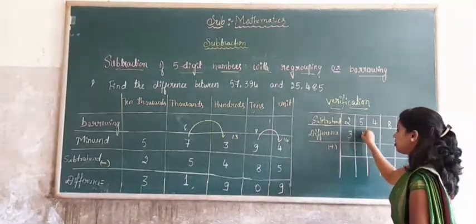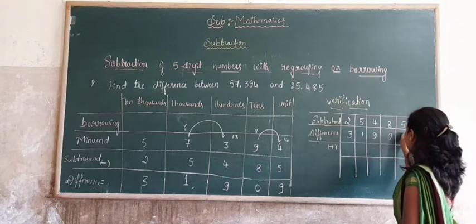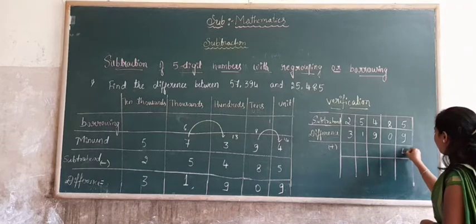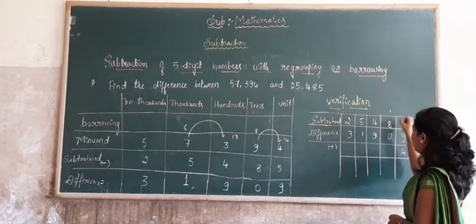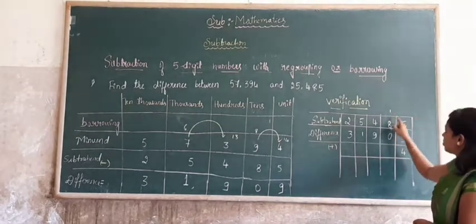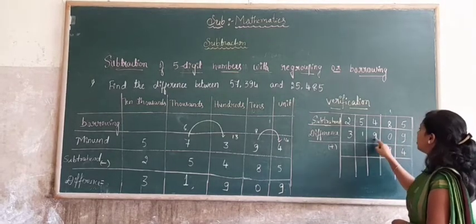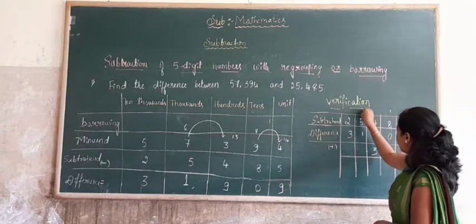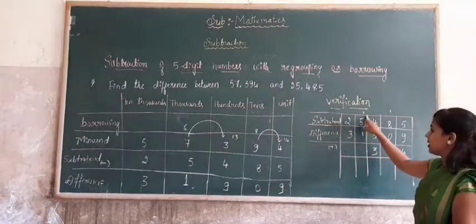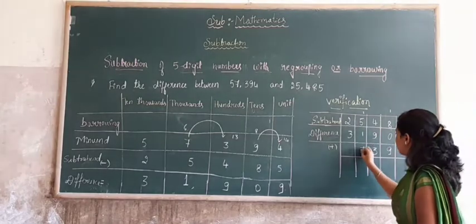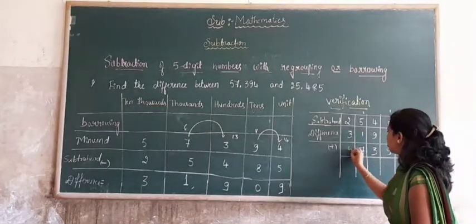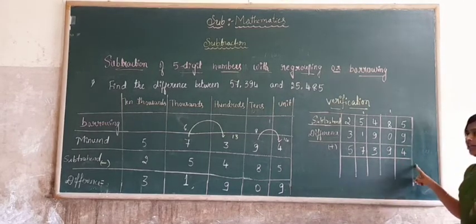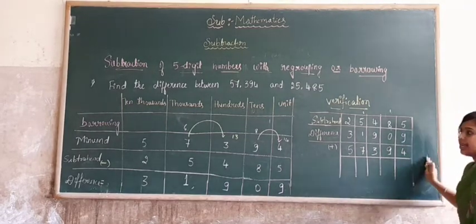The difference is 31,909. Add this number with the subtrahend. 9 plus 5 equals 14, carry 1. 0 plus 8 equals 8 plus 1 is 9. 9 plus 4 equals 13, carry 1. 1 plus 1 equals 2. 1 plus 6 equals 7. 3 plus 2 equals 5. We get 57,394, so our final answer is right.